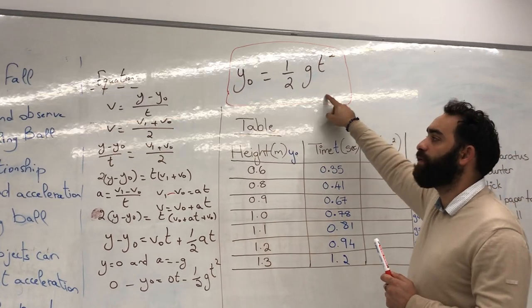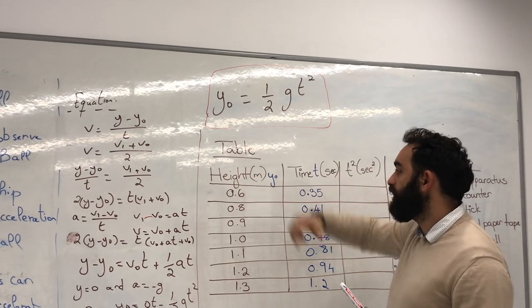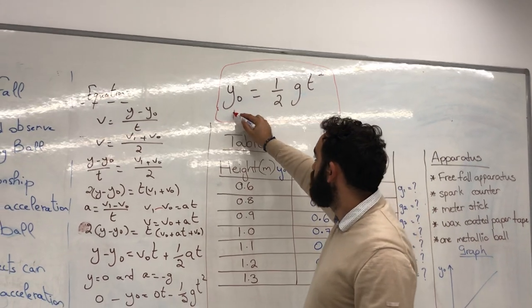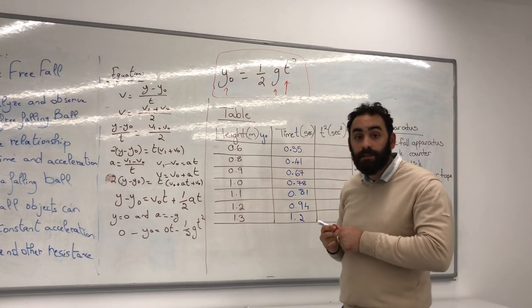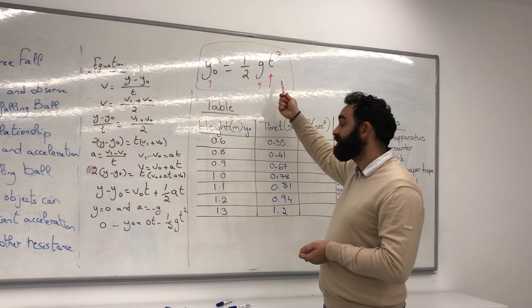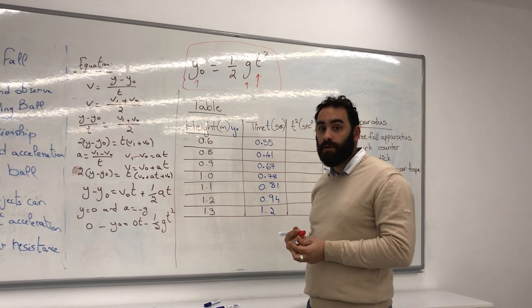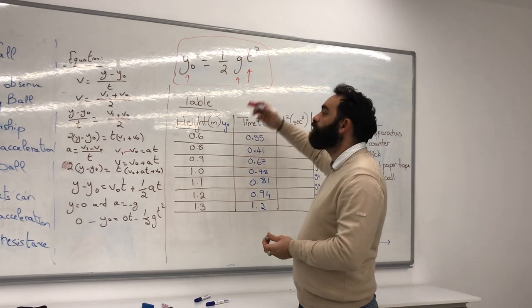This is the only equation. You don't need to write all of this in your report. You just write this equation. You say, what is this? y0, what is the g, what is the t? So, y0 is the height, g is the gravitational force, the t is the time it took for the ball to fall from that height. And, t squared, you just square it.